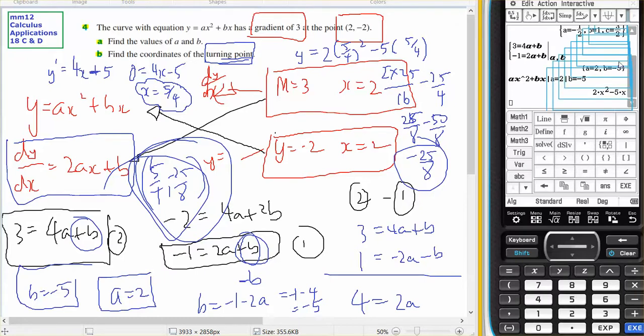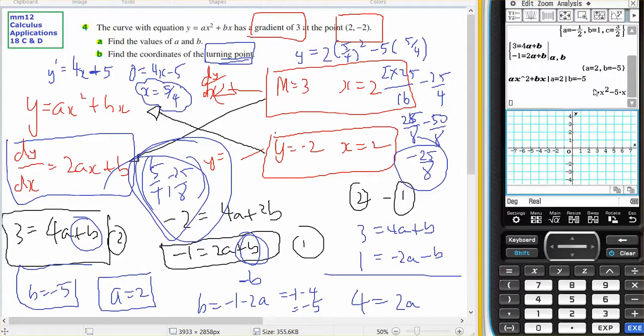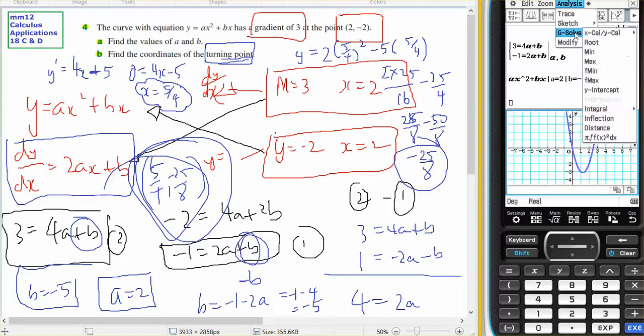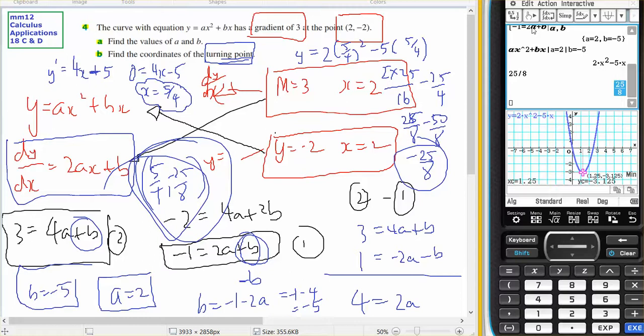there's my turning point analysis, G-solve minimum, and it's at 1.25, which is 5 on 4, and minus 3.125. And 25 on 8 is 3.125.